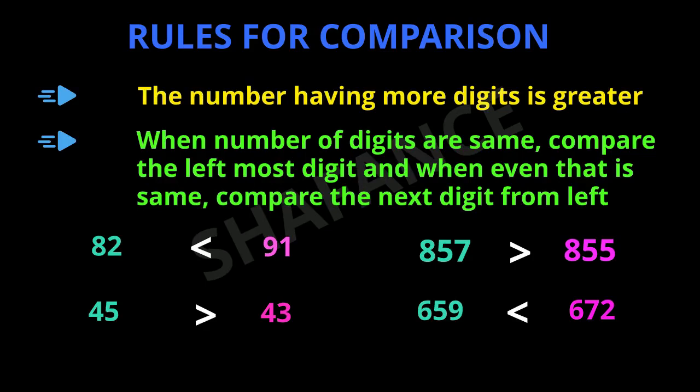So when the number of digits are the same, we compare the leftmost digit, and if that is also the same, we proceed to the next digit from the left. Thank you.